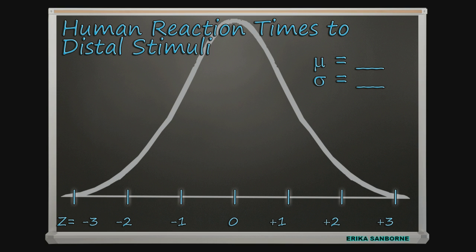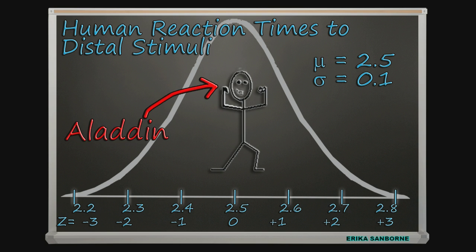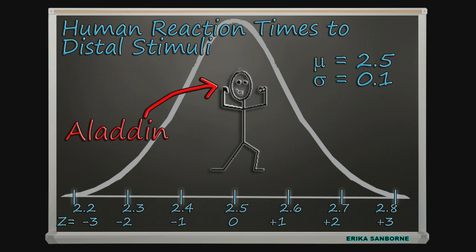Alright, so this is a known normal distribution. For this example, the mean is 2.5 seconds and the standard deviation is 0.1. That's all we need in order to draw this thing, so I will do that and here is the distribution. And now let's say this guy, we'll call him Aladdin. His reaction time is 2.2 seconds. Here is Aladdin.